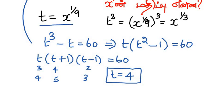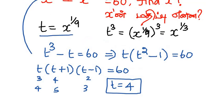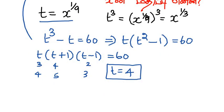So we have the t value. What is t? t equals x^(1/9). Therefore, 4 equals x^(1/9), which means x equals 4⁹. The answer is x equals 4⁹.